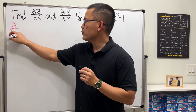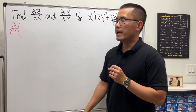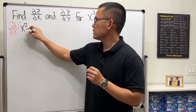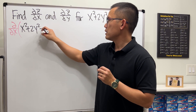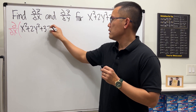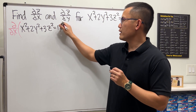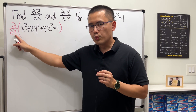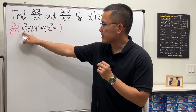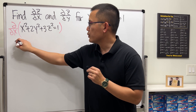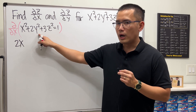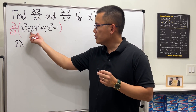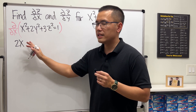Partial derivative with respect to x. We are in the x world, so when we take the derivative of x squared, we get 2x. But y is a constant in the x world, so when we differentiate that, we get 0.